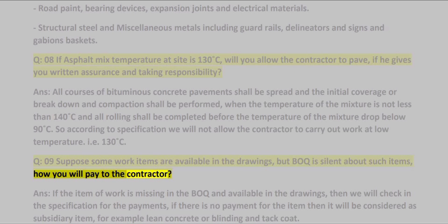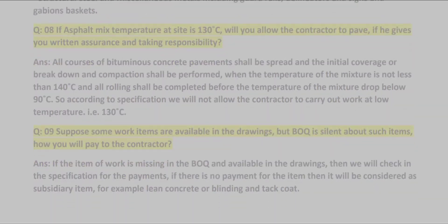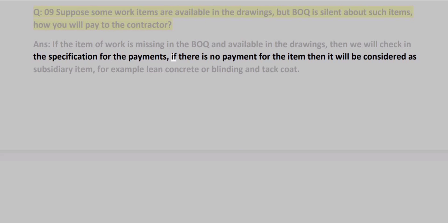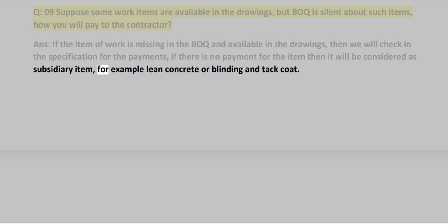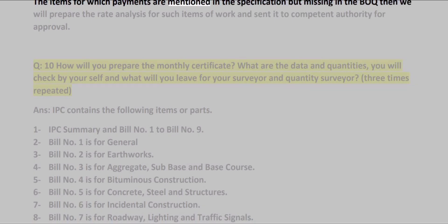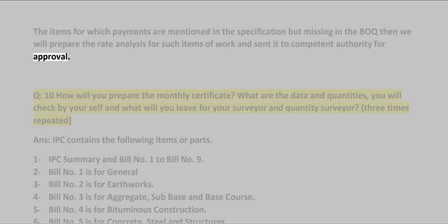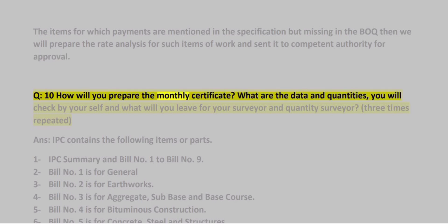Q09: Suppose some work items are available in the drawings but the BOQ is silent about such items — how will you pay the contractor? ANS: If the item of work is missing in the BOQ but available in the drawings, we will check in the specification for the payments. If there is no payment for the item, it will be considered a subsidiary item — for example, lean concrete, blinding, and tack coat. For items where payments are mentioned in the specification but missing in the BOQ, we will prepare the rate analysis for such items and send to the competent authority for approval.